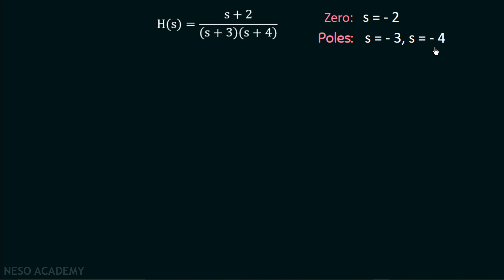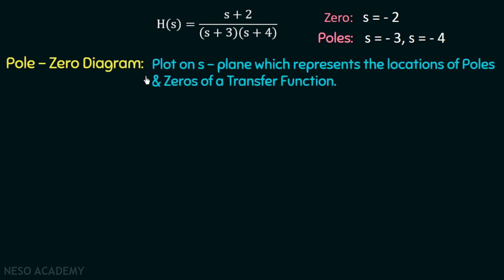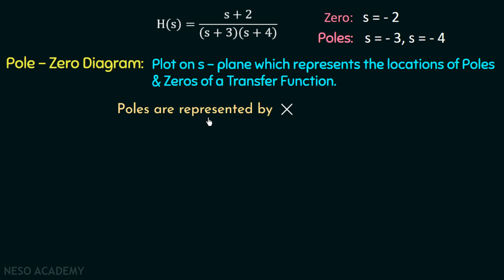Now we are done finding the zeros and poles for this transfer function. If we want to plot these zeros and poles in the s-plane, we use the pole-zero diagram. The pole-zero diagram is a plot on the s-plane representing the locations of poles and zeros of a transfer function. In a pole-zero diagram, poles are represented by a cross and zeros are represented by a circle.